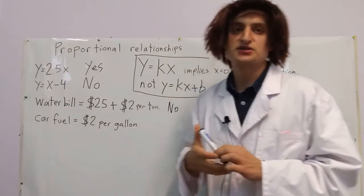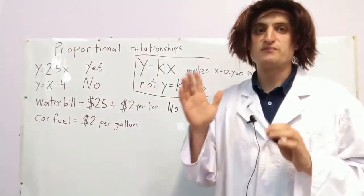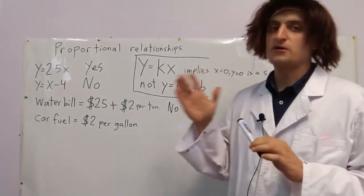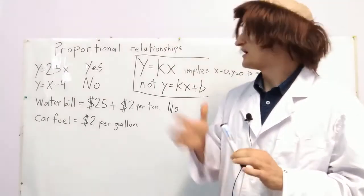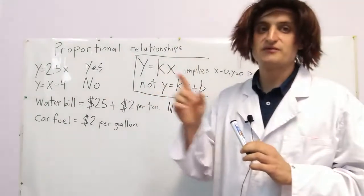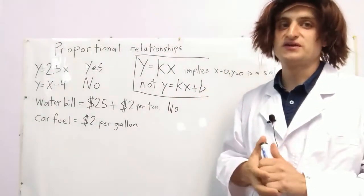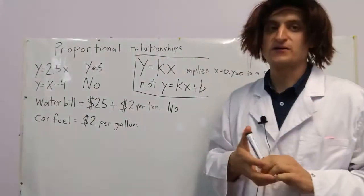You can ask your parents. Ask them this question. If we don't use any water for one month, what will our water bill be? If your water bill would be 0, then it's proportional, but it's probably not proportional. You'll still have to pay that month, even if you don't use water. Talk to them about it.